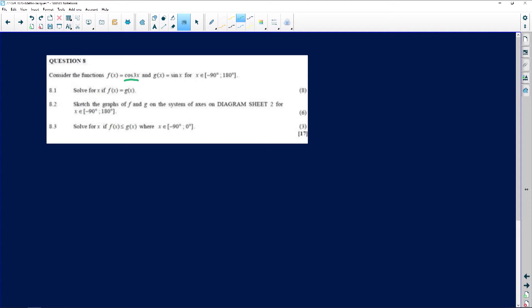They ask us, find out where the function f is equal to g. Now, the functions f of x, let me write them down here, is the cosine of 3x, and g of x is the sine of x. And we're working over a domain from minus 90 to 180, both included.